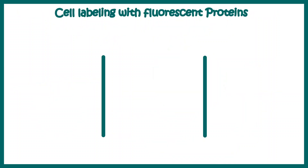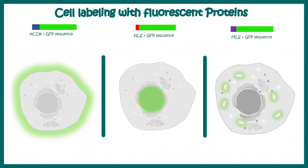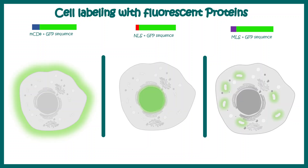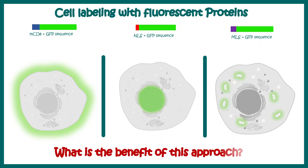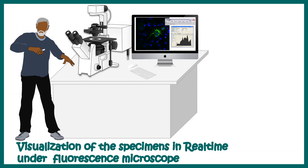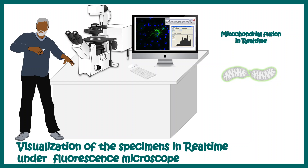If we want to label different parts of the cell, we can use GFP. By tagging GFP with a membrane tether such as MCD8, it would mark the membrane. If we attach a nuclear localization signal or a mitochondrial localization signal, GFP would go to the nucleus or mitochondria, highlighting that particular structure in real time. For example, we can study the fusion dynamics of mitochondria by labeling them with GFP attached to a mitochondrial localization signal, and then track mitochondrial fusion dynamics in real time.